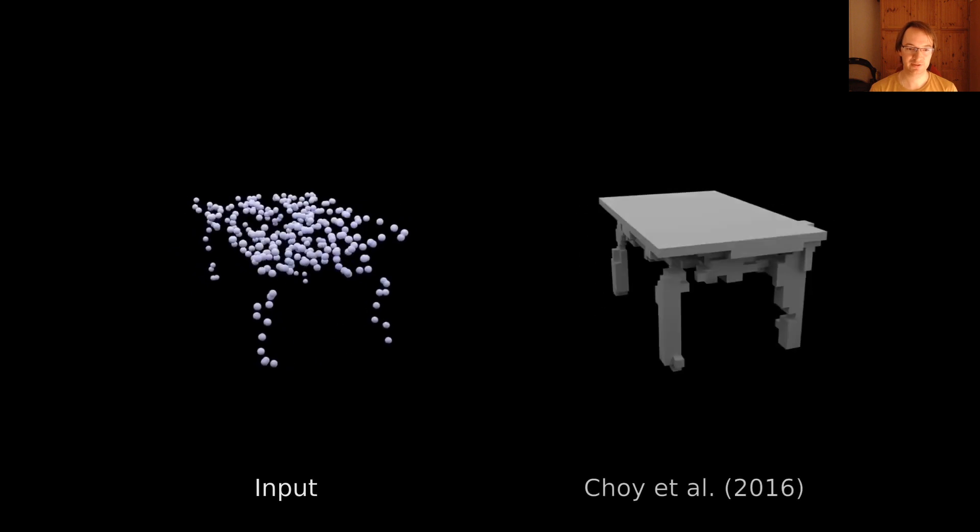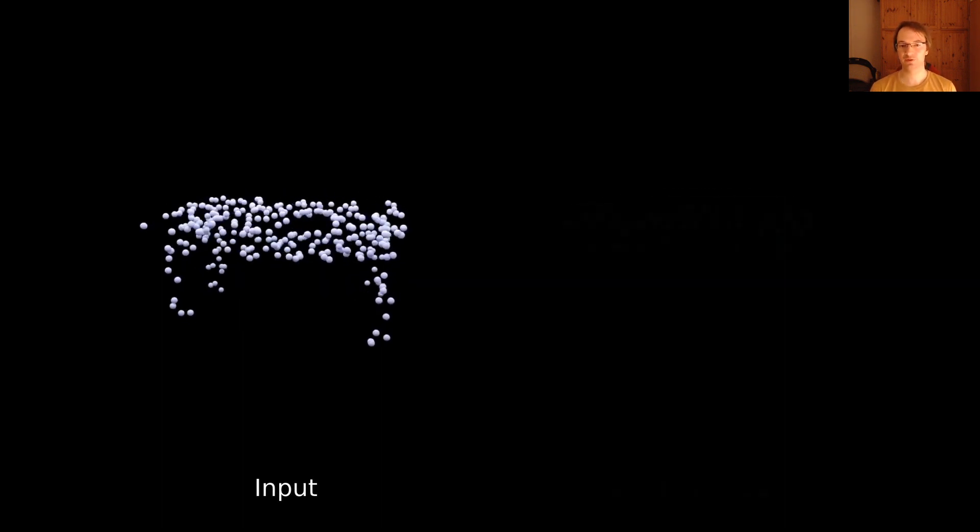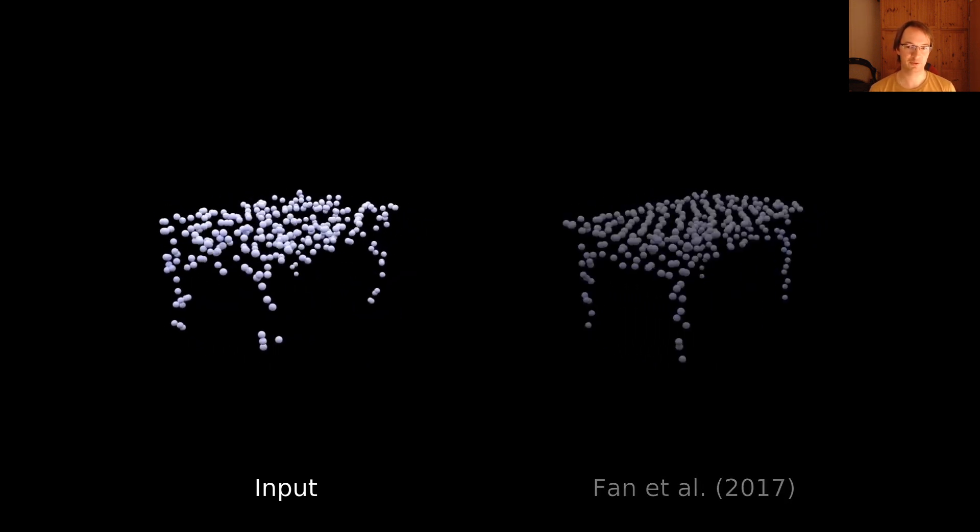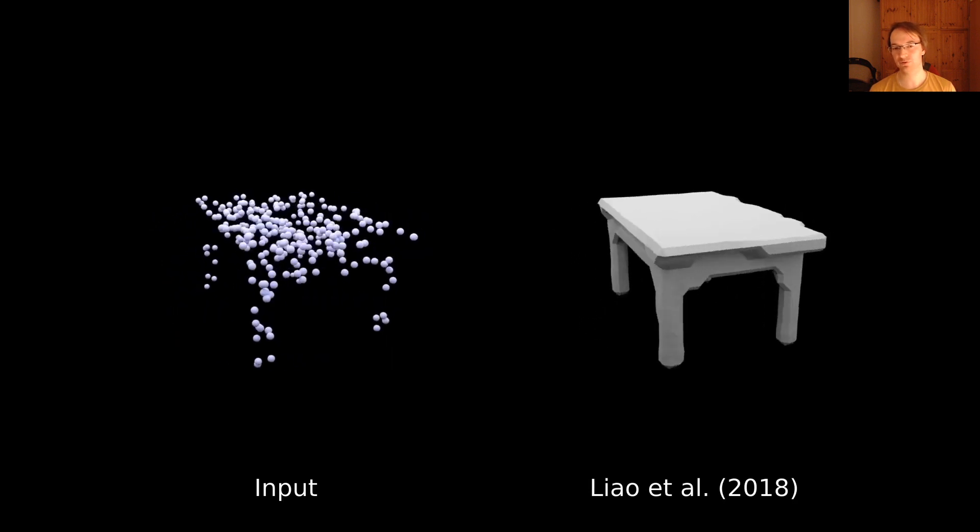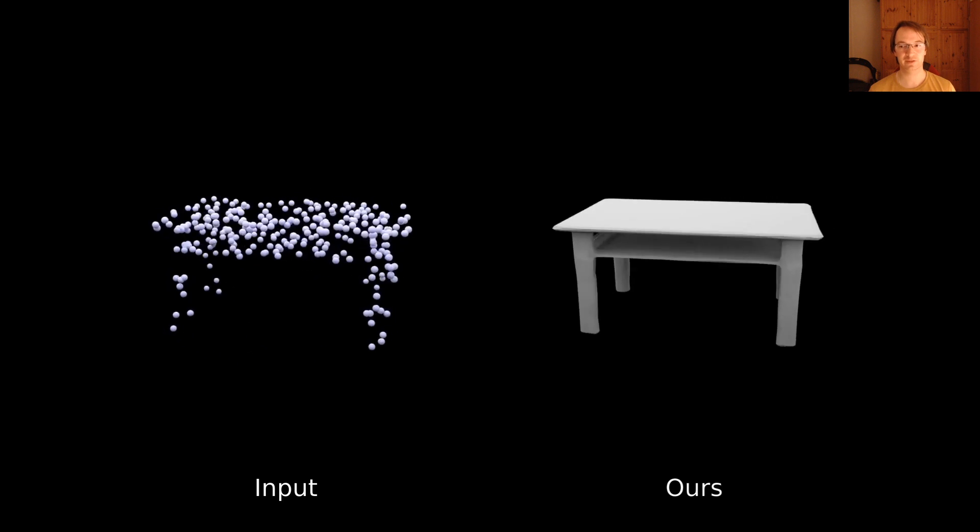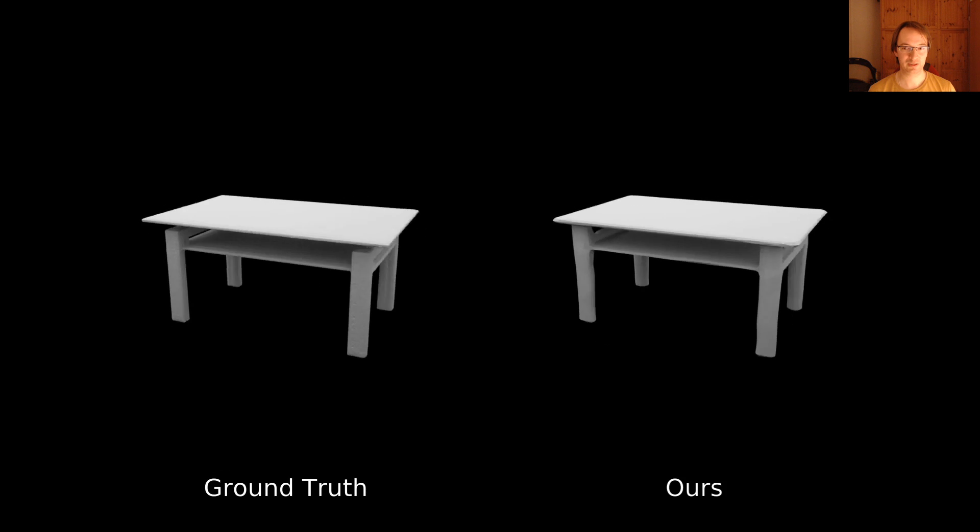This is also possible from just very noisy point sets. You can see a very sparse and noisy point set on the left and the corresponding reconstructions of various baselines and the Occupancy Network approach on the right. So the model is really able to learn to reconstruct even given very noisy inputs and learn to reconstruct watertight surfaces well.